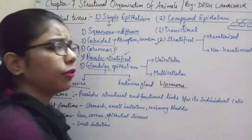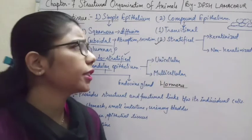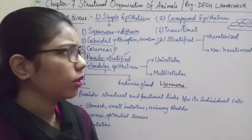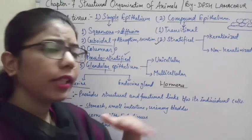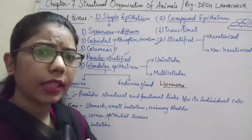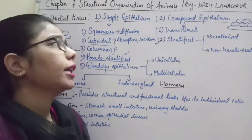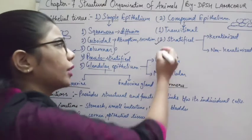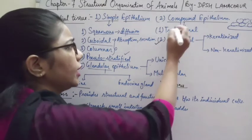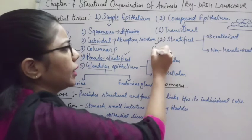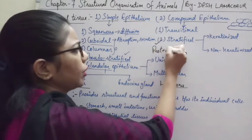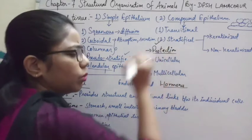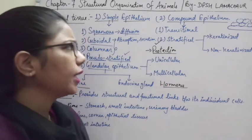Stratified epithelium has proper multiple layers of cells. These layers provide protection to cells and to the organs they surround. The function of compound epithelium is therefore protection.